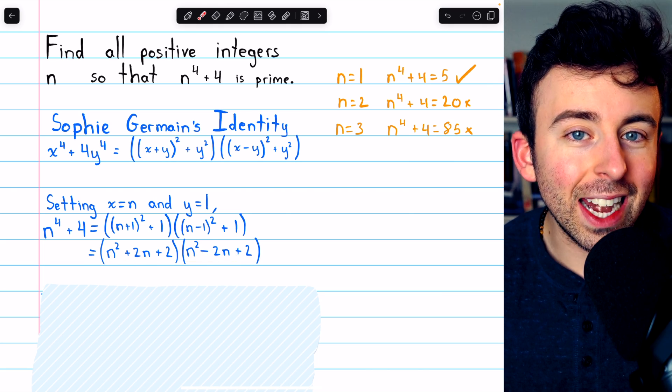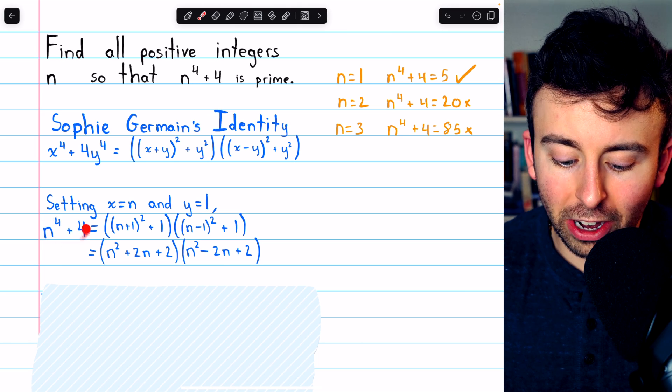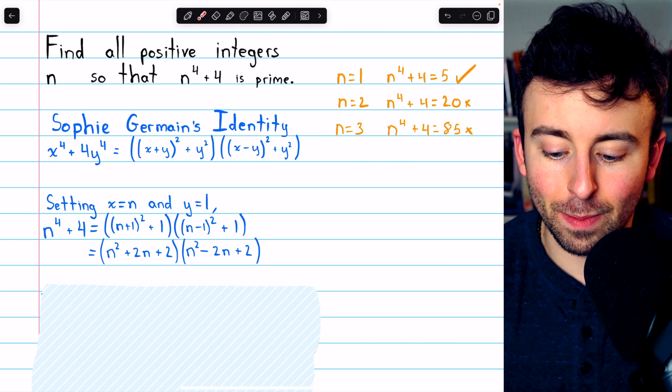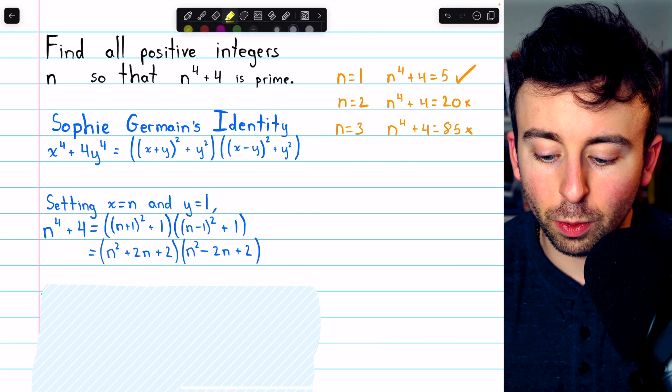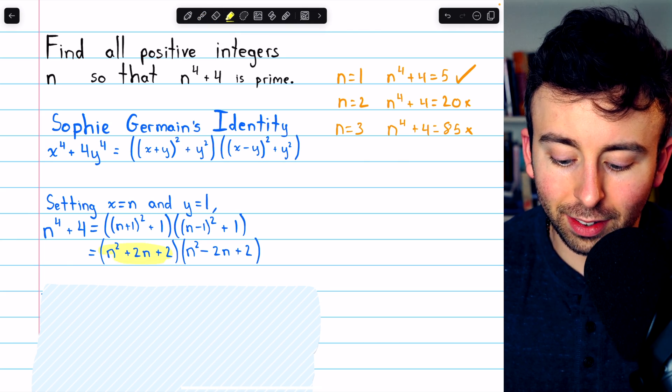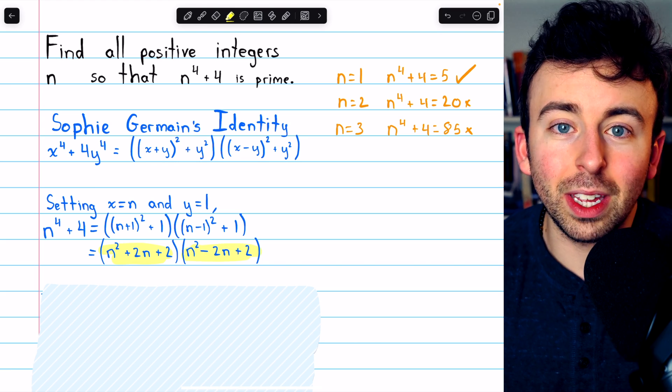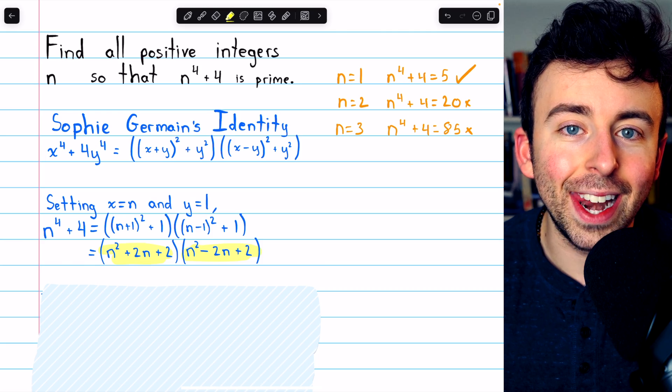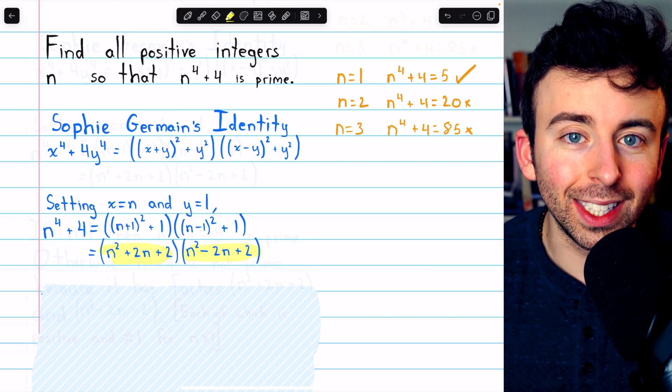But for any other value of n, our expression, n to the 4 plus 4, is obviously not prime, because right here we have a factorization into integers. This times this. So it can't possibly be prime for any other value of n. n equals 1 is the only possibility.